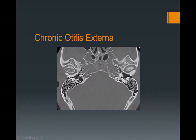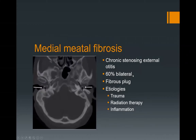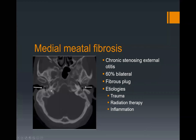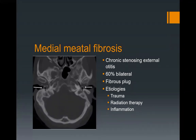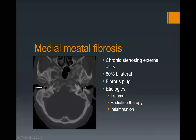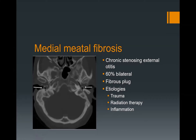The patient can present in a chronic setting with marked narrowing of the bony EAC. Another complication is chronic stenosing external otitis, also called medial canal fibrosis. When you examine the patient otoscopically, you see a soft tissue mass which basically occludes the medial segment of the external auditory canal. In 60% of cases this is a bilateral condition. You can see soft tissue filling the medial portion of the bony EAC — it's a fibrous plug. Etiologies besides infection include trauma or radiation therapy.